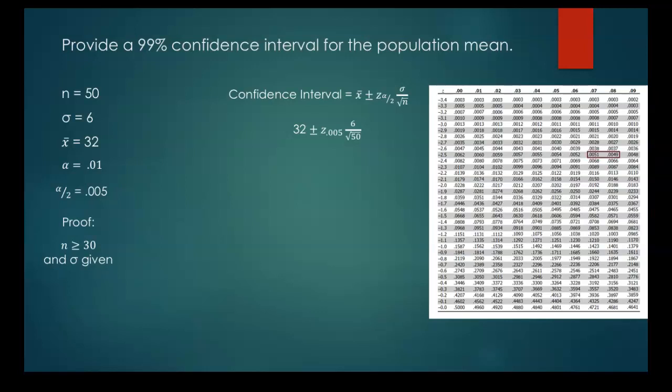And what we find is that it's once again right between two different z-scores. So we are going to need to average 2.57 and 2.58. So the z-score that we're going to use is 2.575.